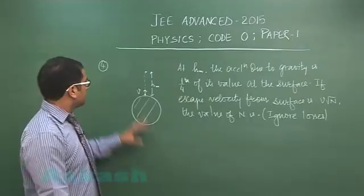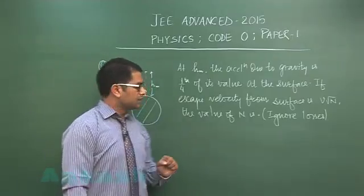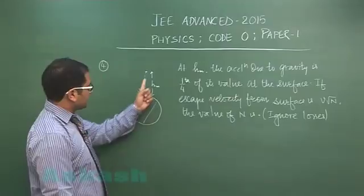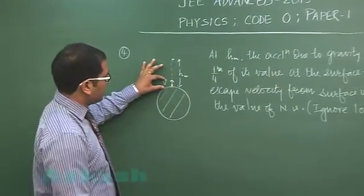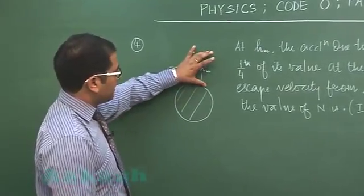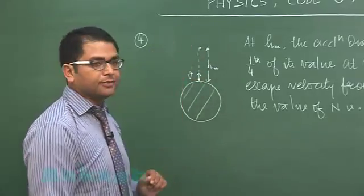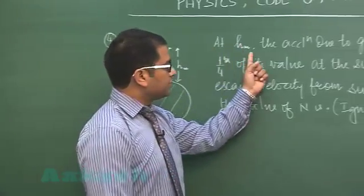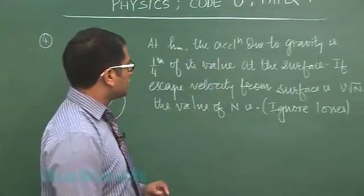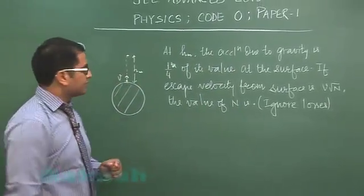Question number 4 has been taken from gravitation. A particle is projected vertically up with speed v, and h m is the maximum height it covers. That means when it reaches here, the speed is 0. And at that particular height, the acceleration due to gravity is one fourth of its value at the surface.